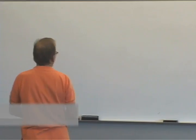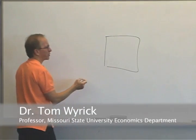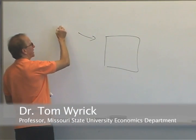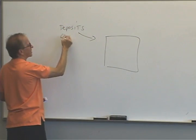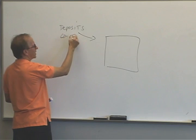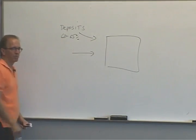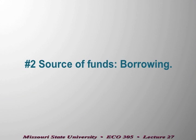We want to pick up our discussion with the sources of bank funds. The number one source of funds for banks is deposits — about 60 to 65% of all funds flowing into banks. That includes transaction deposits and non-transaction deposits. The second most important source, dollar-wise, flowing into banks is borrowing.